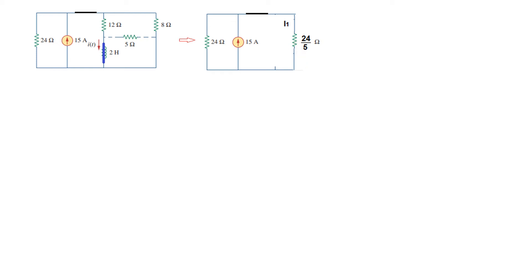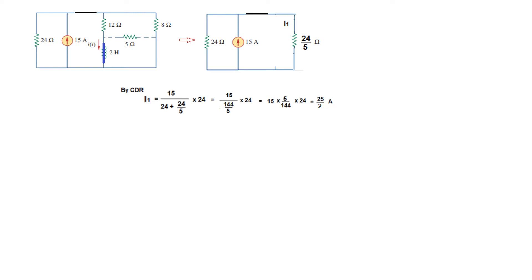By CDR we need to find current I1. In current division rule we divide the total current — 15 ampere — by total resistance, which is 24 plus this value, and multiply by the opposite arm. We want to find the current here, so we multiply by the opposite arm: 24. This comes to be 25 divided by 2 ampere, or 12.5 ampere. This is I1.